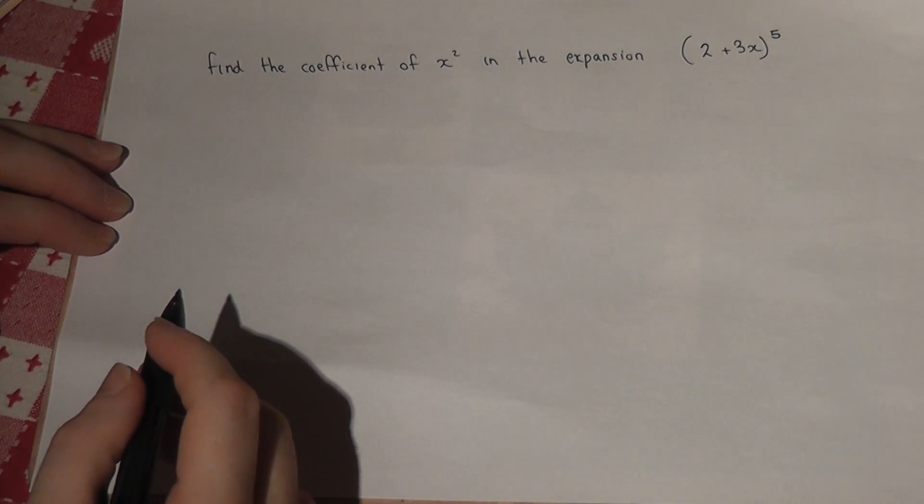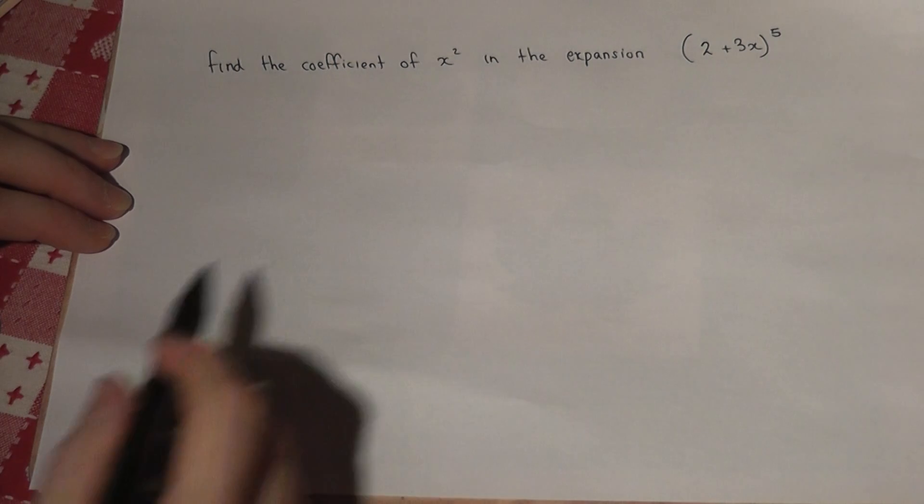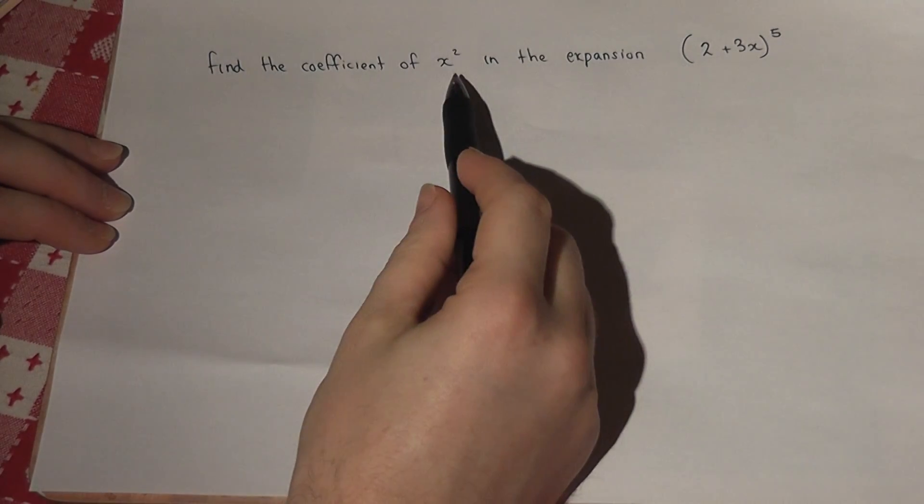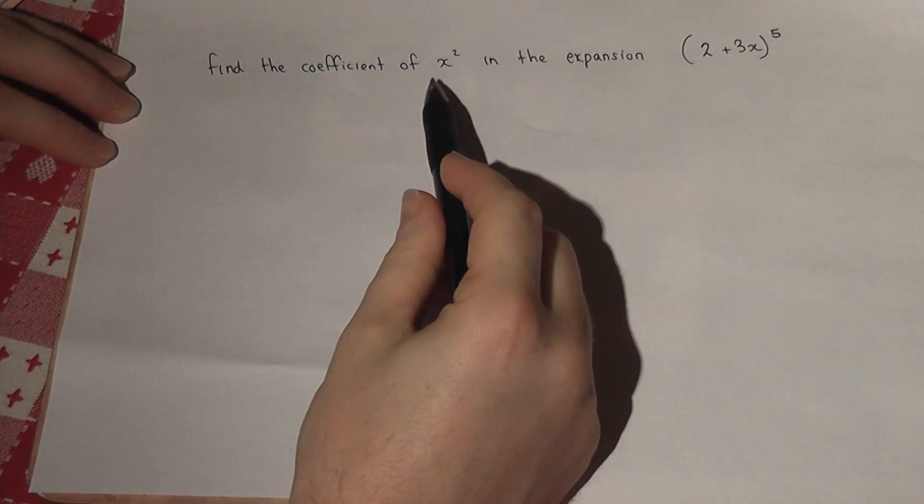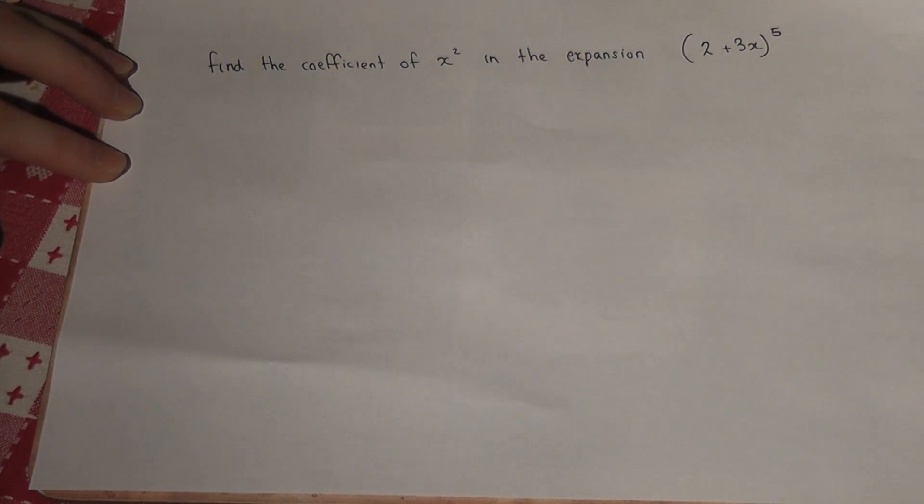Sometimes with binomial expansion, rather than find the entire expansion, we just want to find a particular term within the expansion. In this case, the x squared term. And there's a quick way of doing this.